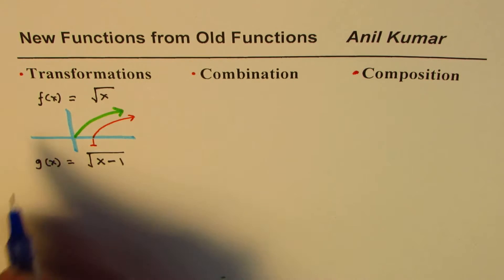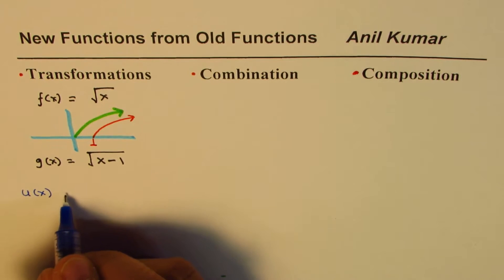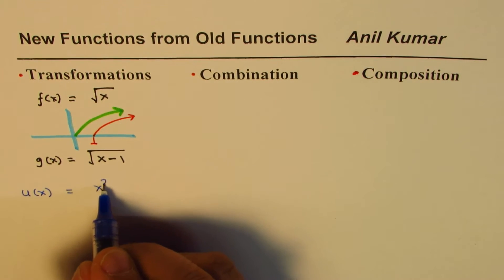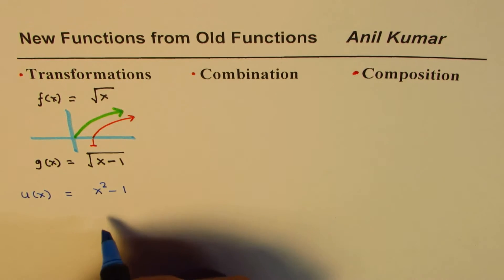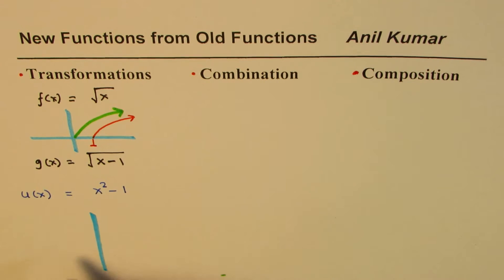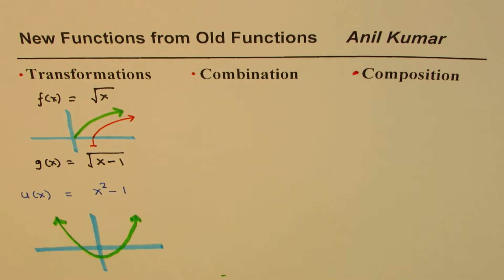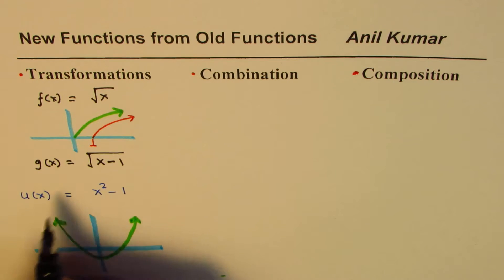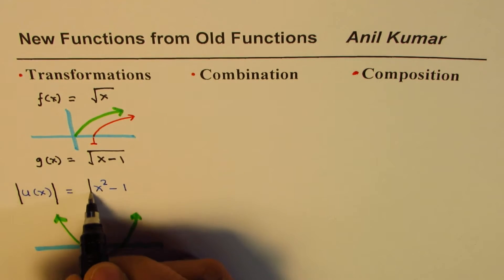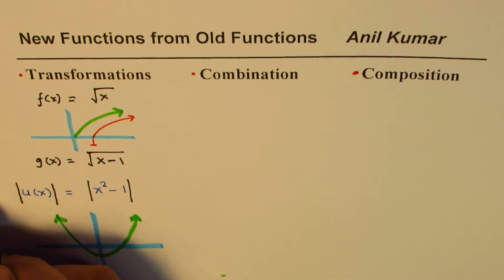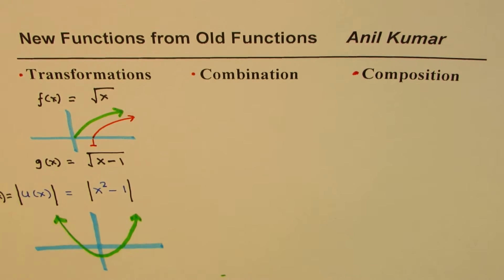An interesting case for transformation: let me take another example. Let us say we have u(x) equal to x squared minus one. Let me sketch this function — u(x) equals x squared minus one is a parabola shifted one unit down. Now how about transforming this function by taking the absolute value of u(x)? Let's call this new function v of x, so that becomes the transformed function.